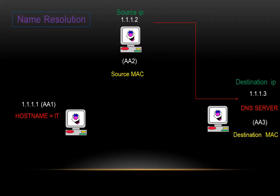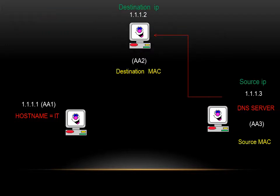Third, now since AA2 knows that the DNS server's MAC address is AA3, it would ask AA3: what is the IP address for IT?